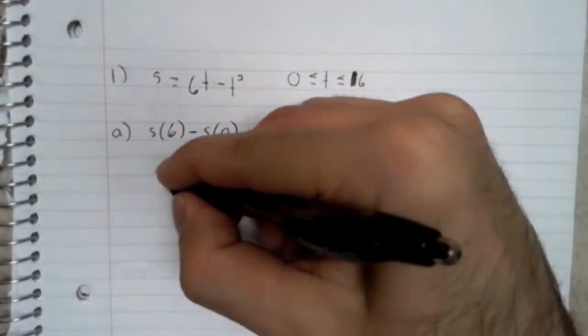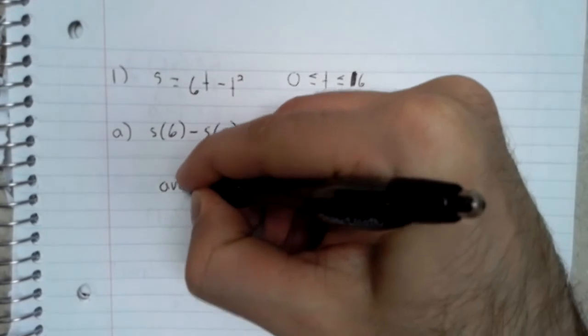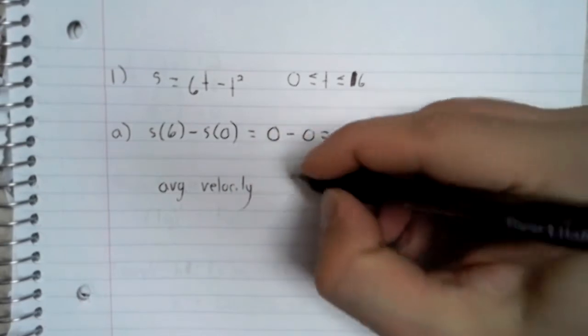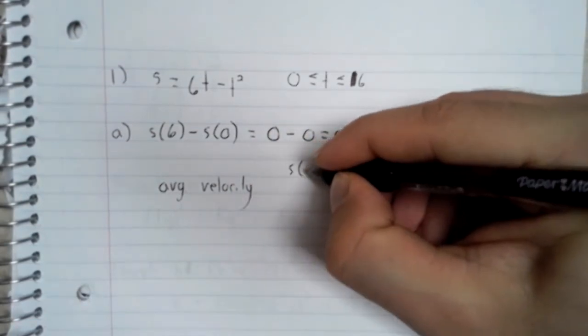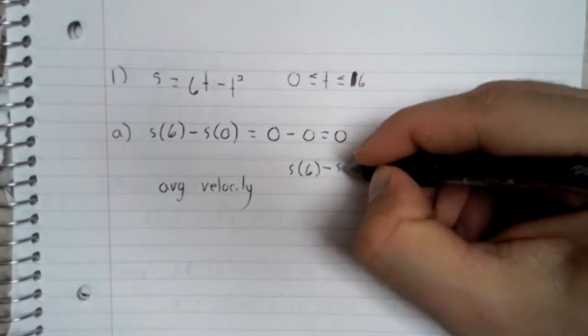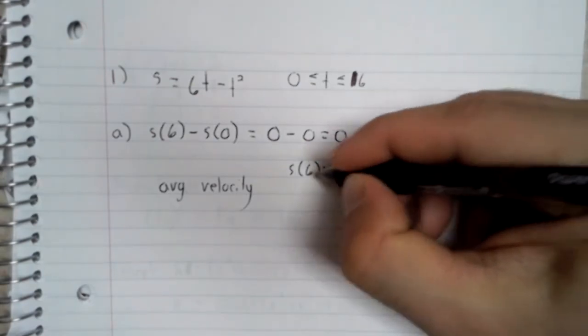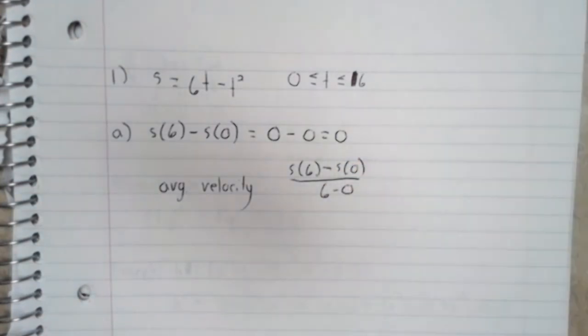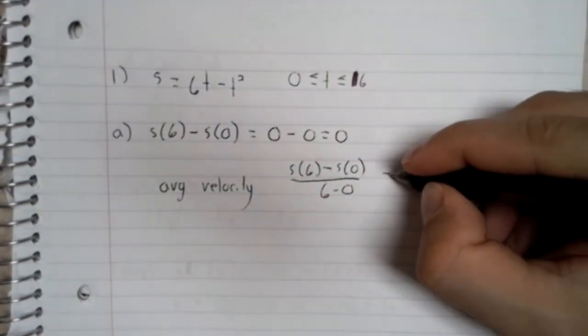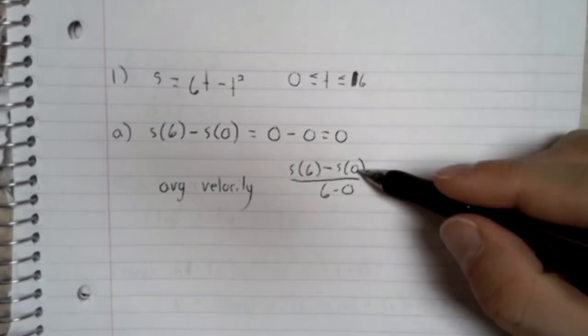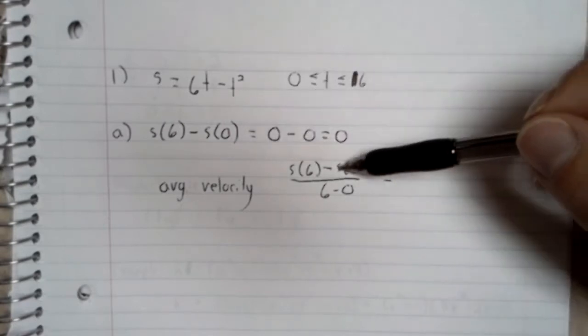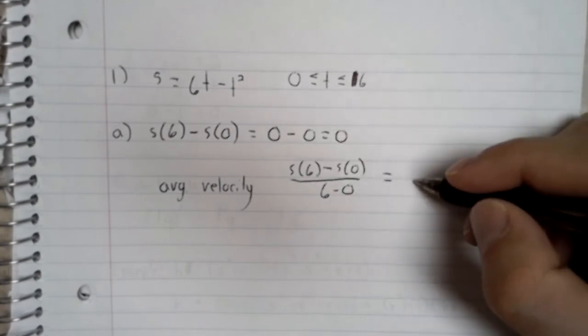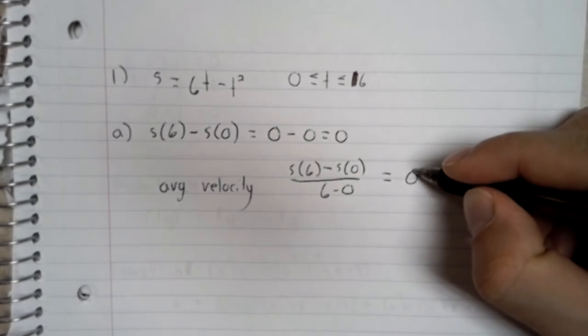If you're looking for an average velocity, that is the average rate of change of the position. And we calculated this numerator up here. 0 divided by 6 is 0.